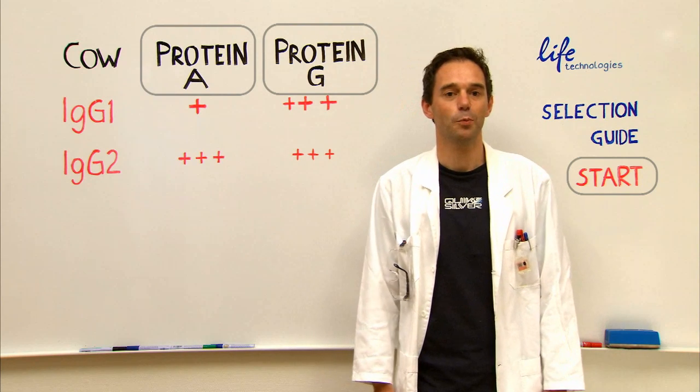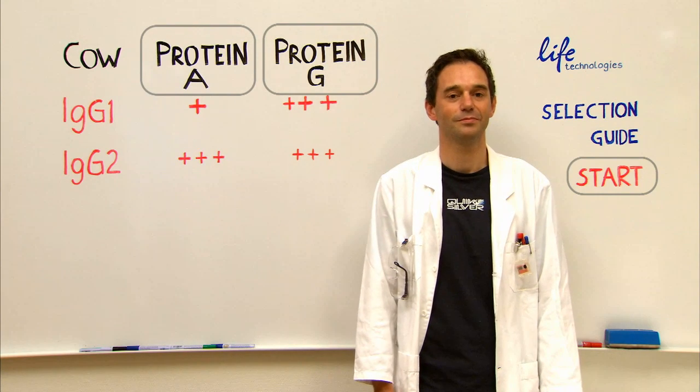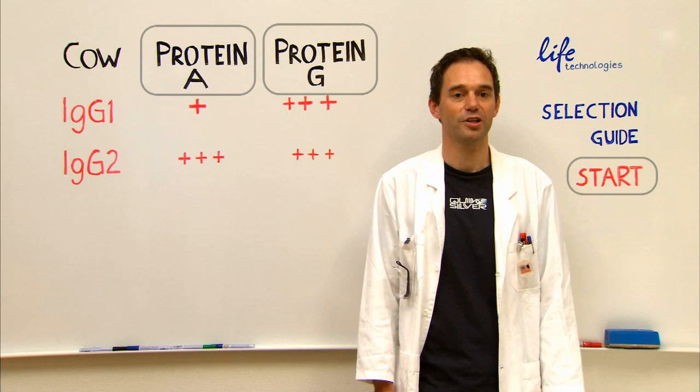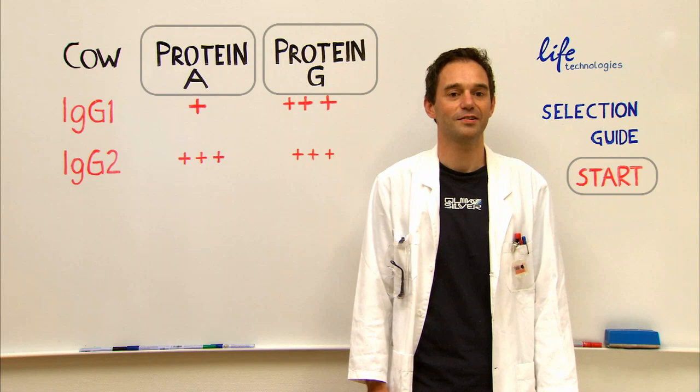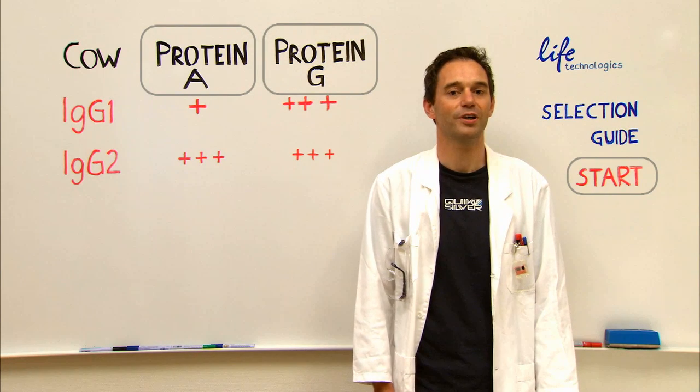So when affinity is the same, we recommend protein G. We'd recommend protein G for both subclasses listed here — it's your choice. Click one.